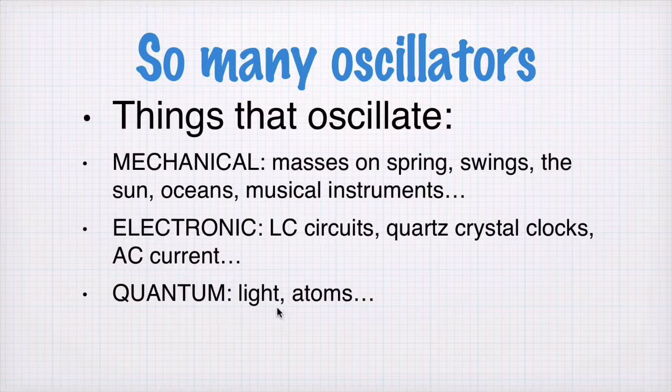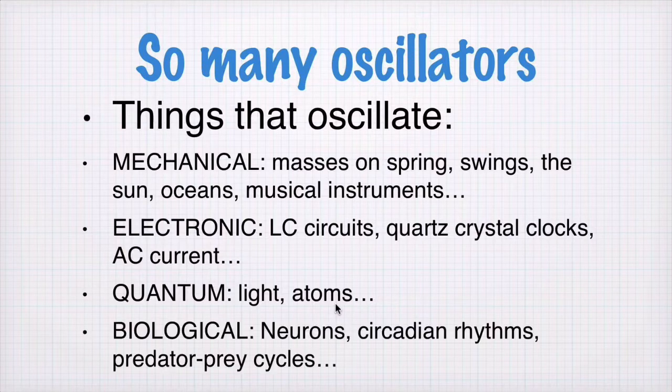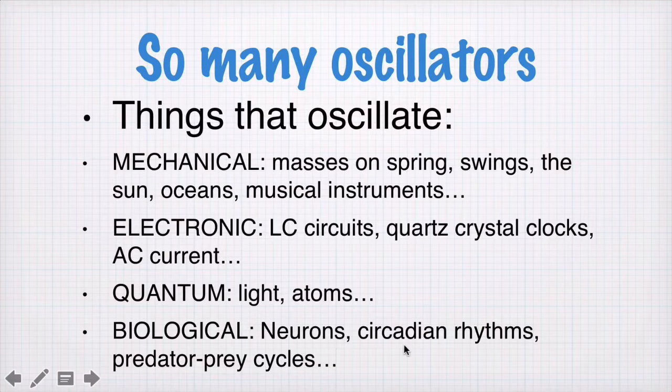There are quantum mechanical oscillators. Light and atoms can both be described using equations of oscillation and harmonic motion. And there are biological oscillations. Neurons, circadian rhythms, predator-prey cycles. These are all things that oscillate in biological systems.